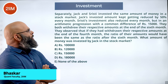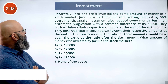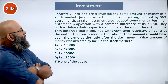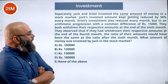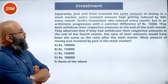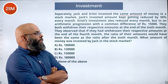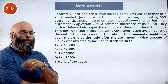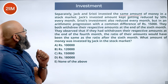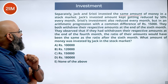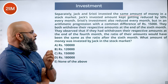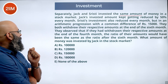Jack and Srishti invested the same amount of money in the stock market. Jack's investment kept getting reduced by 50% every month. Srishti's investment also reduced but in an arithmetic progression with a common difference of 15,000 — she loses 15,000 after month one, 15,000 after month two, and so on. They both withdrew their respective amounts at the end of the sixth month. They observed that if they had withdrawn at the end of the fourth month, the ratio of the amounts would have been the same.